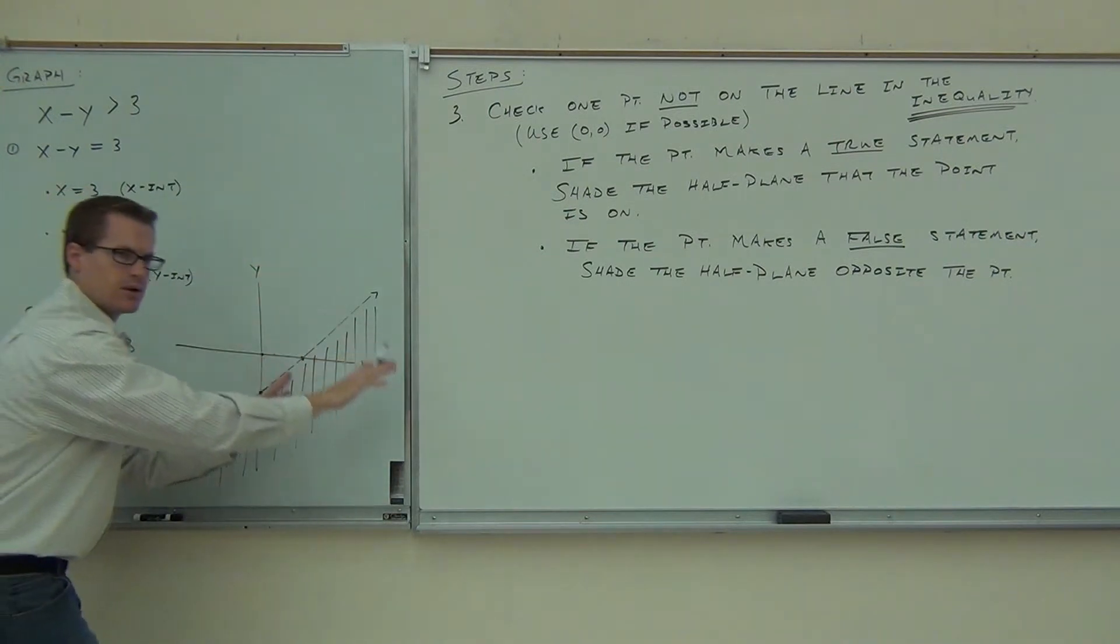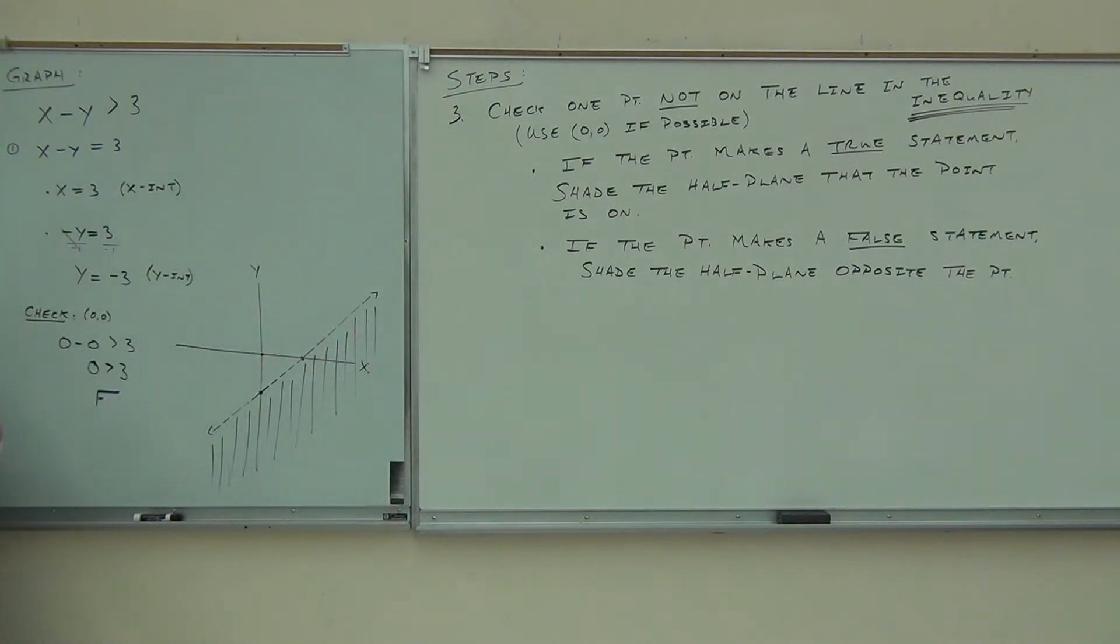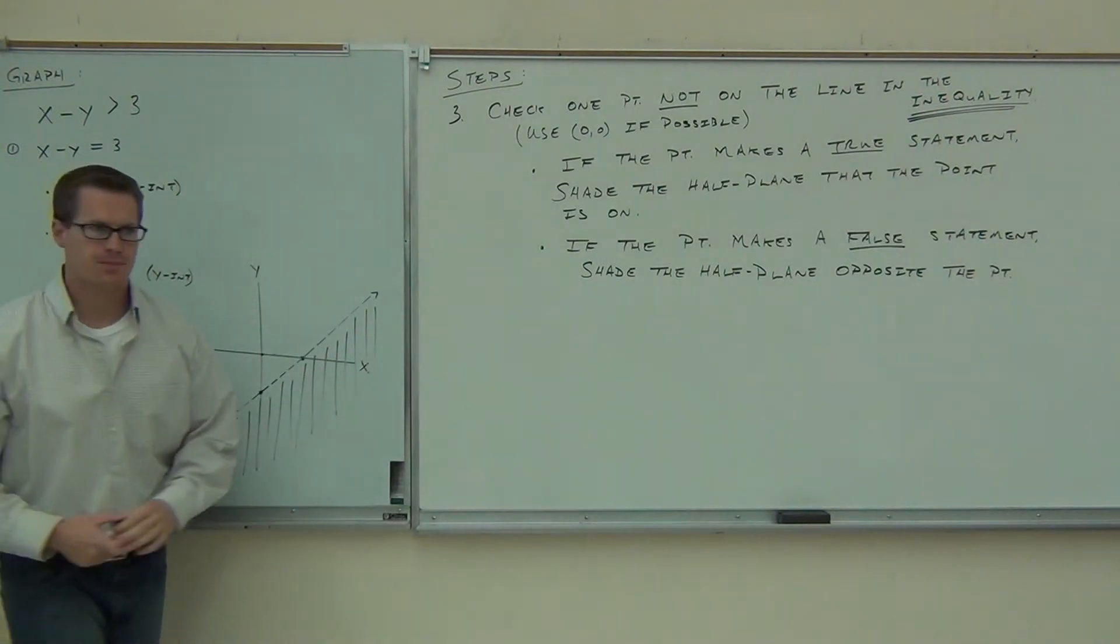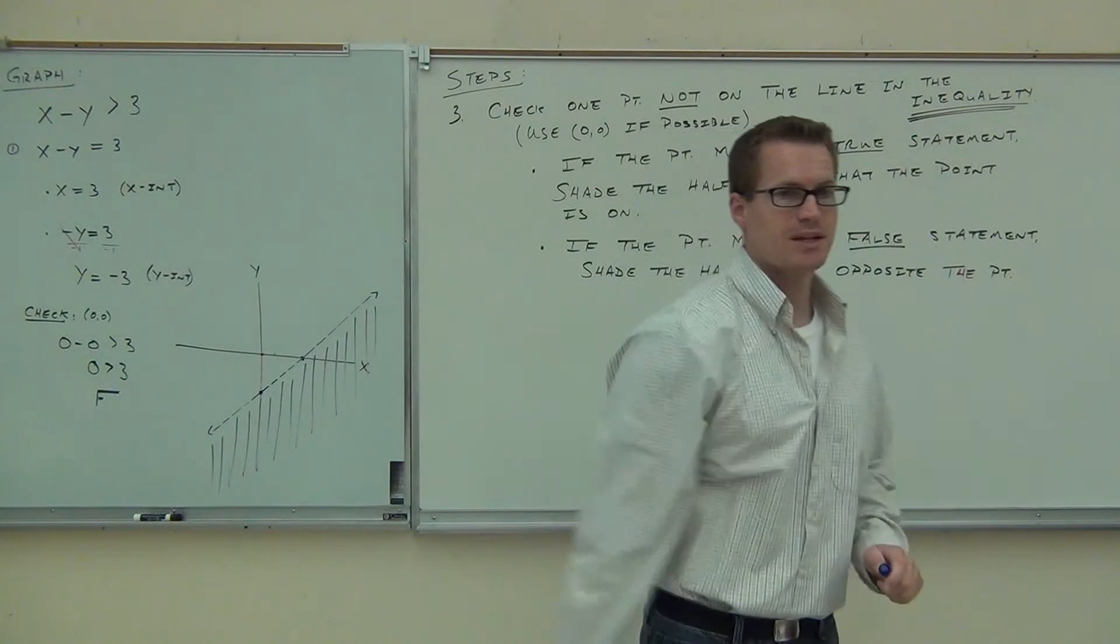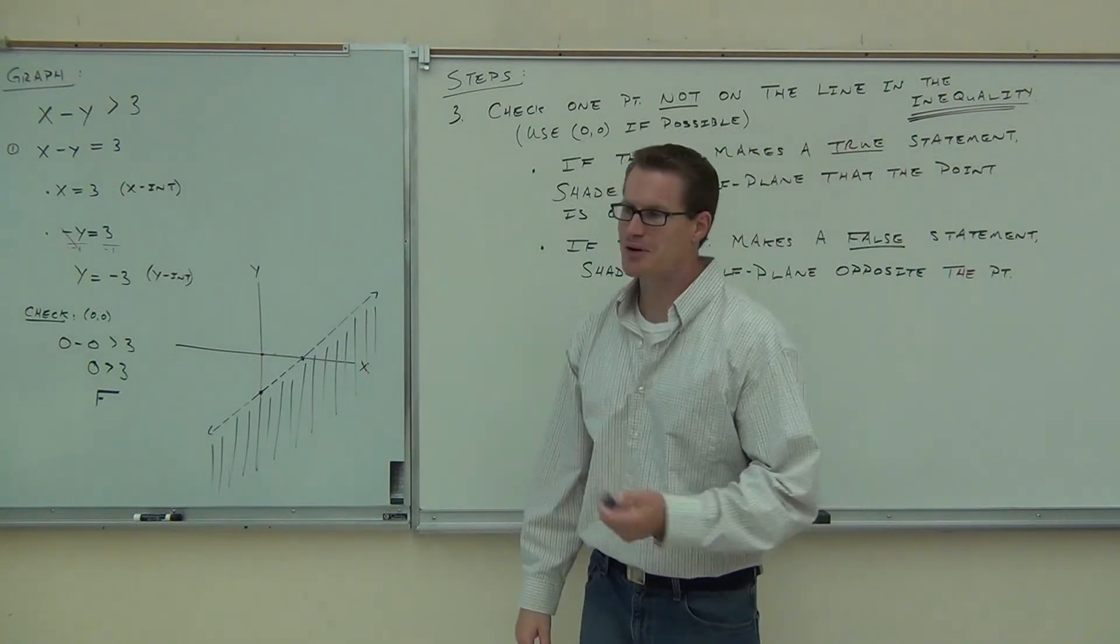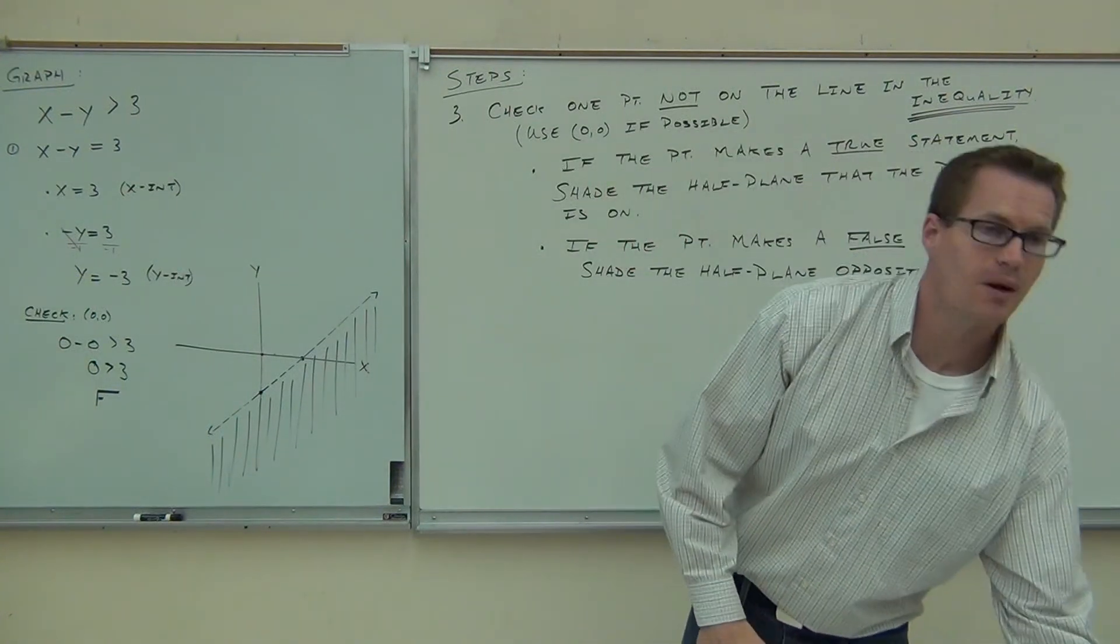It goes on forever. It's a whole half of a plane. Half graph. So we check the point. If it's true, we would have shaded that side. If it's false, you shade the other side. Are we okay with that? Good. Now, do these really take 30 minutes to actually do? No. No, they're pretty quick. In fact, we're going to do one in about 5 minutes right now.